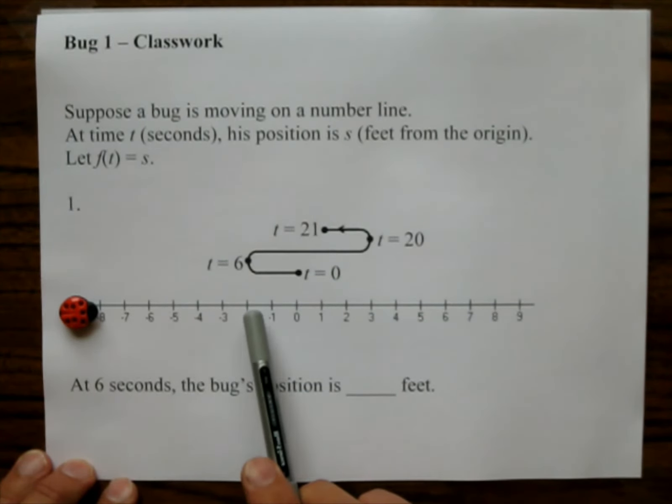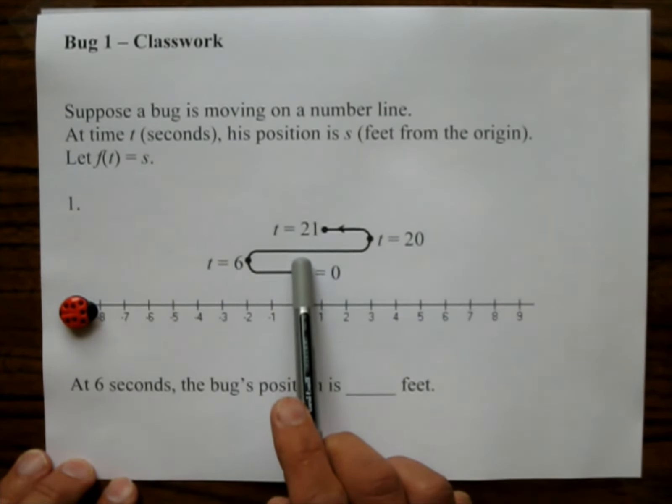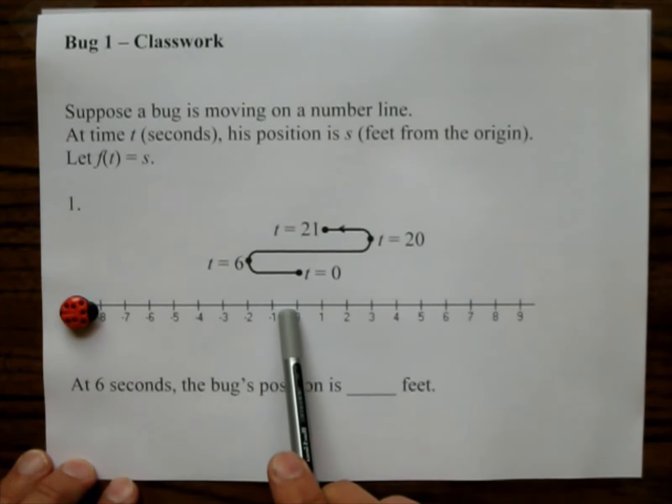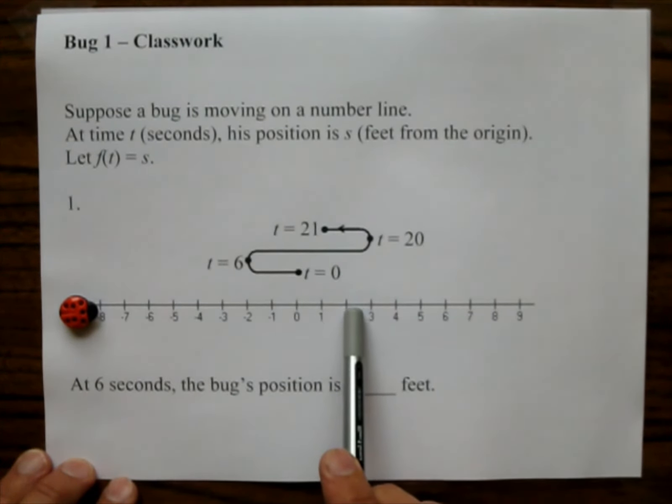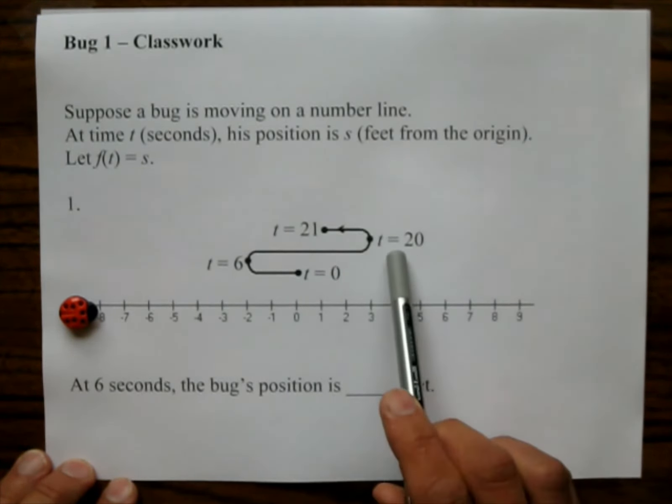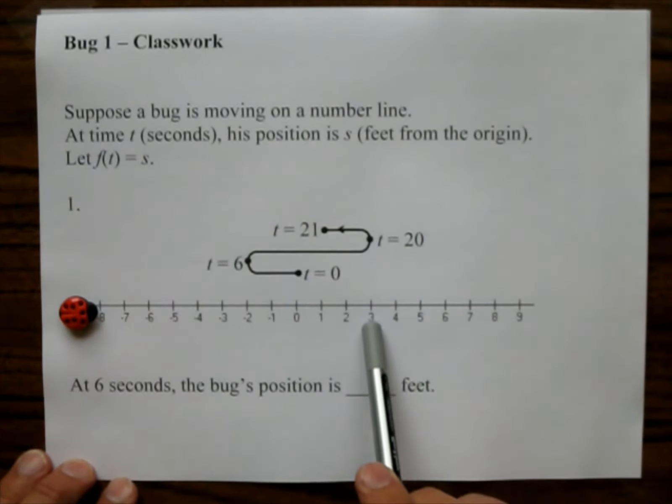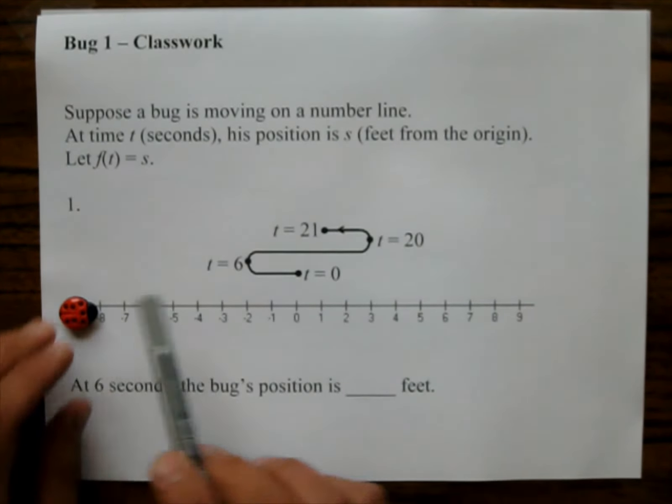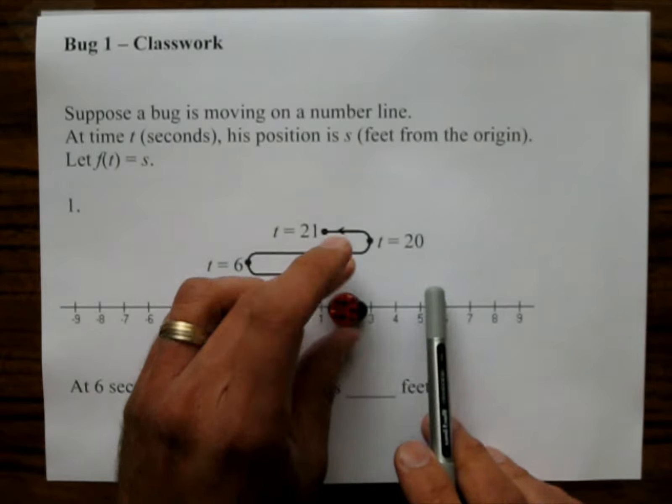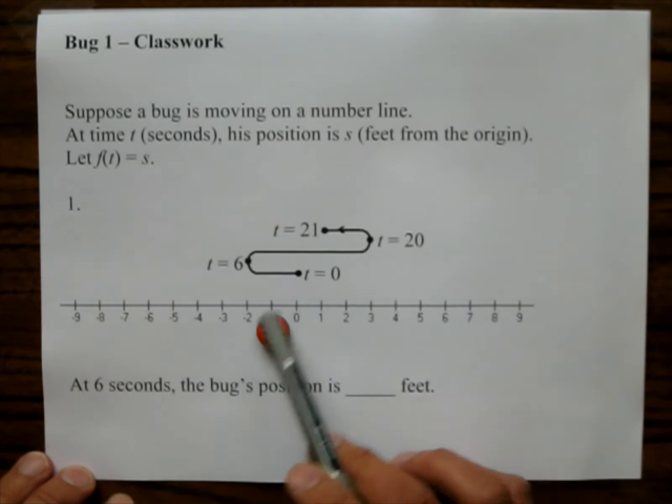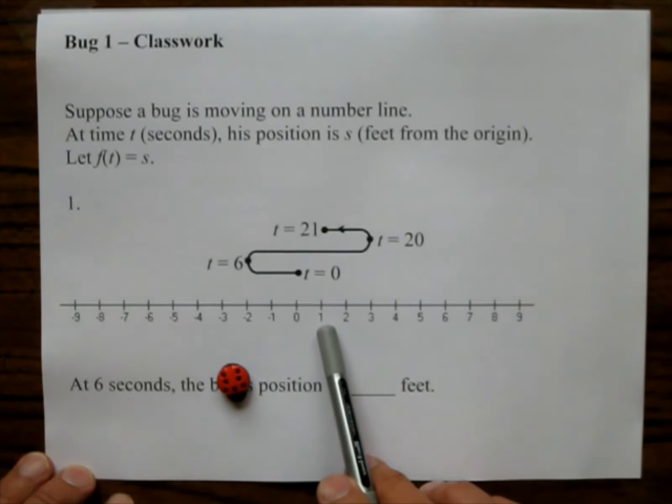And then the bug starts traveling this way. The bug starts going to the right and he reaches about 3 at 20 seconds. Turns around or maybe not turns around. Maybe he starts just backing up and at 21 seconds, he's about here at 1.